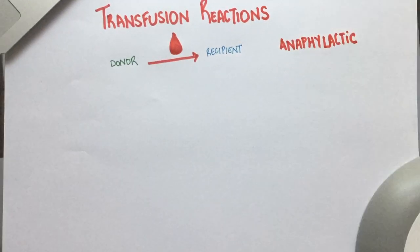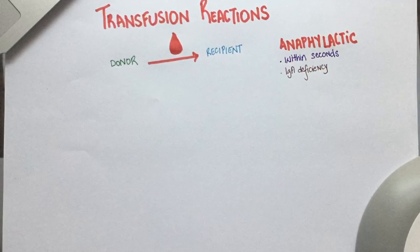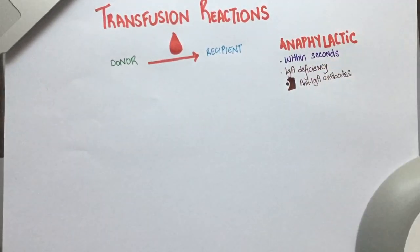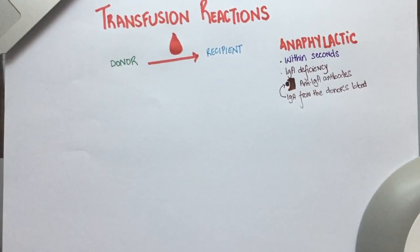The first one on our list is anaphylactic reaction. This reaction takes place within seconds of transfusing blood. Anaphylactic reaction to blood transfusion happens in individuals who have IgA deficiency. Since the recipient doesn't have IgA, they produce IgA antibodies. These antibodies attack the IgA in the donor's blood, resulting in anaphylactic features like hypotension, wheezing, and angioedema.